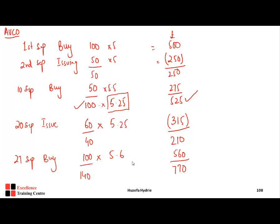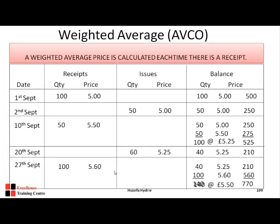We calculate the new average price: £770 ÷ 140 = £5.50. So in the weighted average method, after every purchase we calculate a new average price. Reconciling: closing inventory value is £770 and the final weighted average price is £5.50 — both confirmed correct.